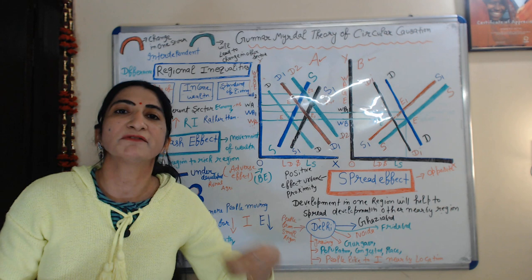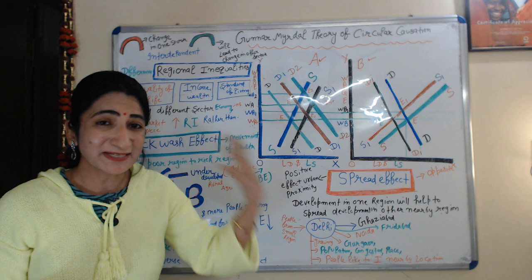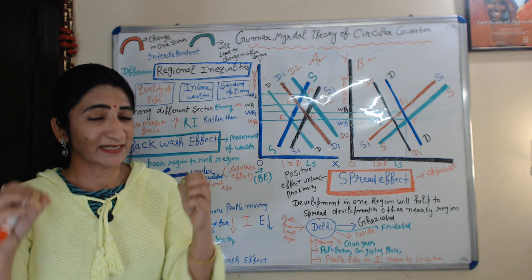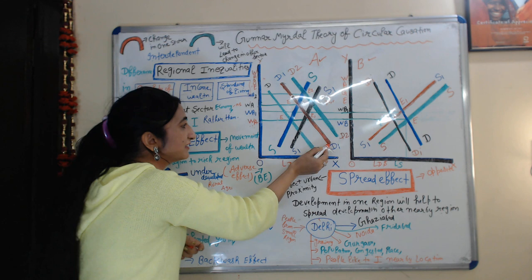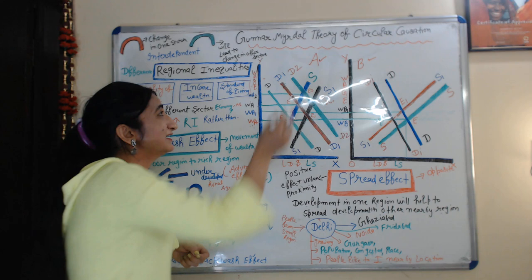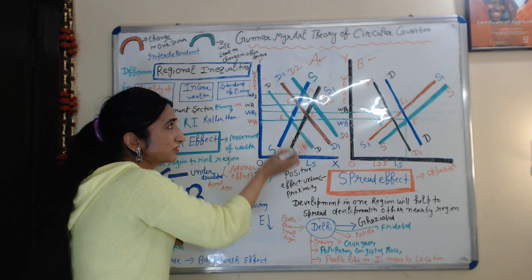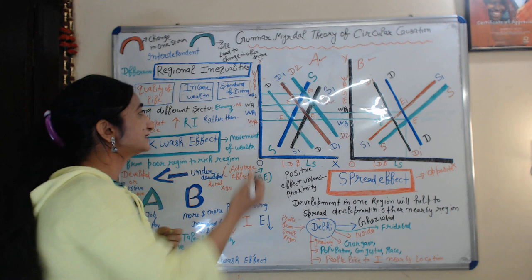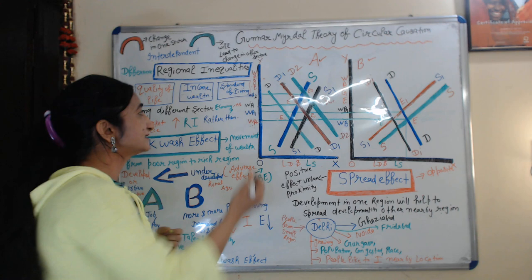Now, because region A is a developing region and growing very fast, investment and capital formation are increasing rapidly, so labor demand is also increasing in region A. When labor demand increases, the labor demand curve shifts forward. D1D1 — this red curve — is the new labor demand curve in region A. When labor demand increases, wage rate also increases, and the new wage rate is W'A.